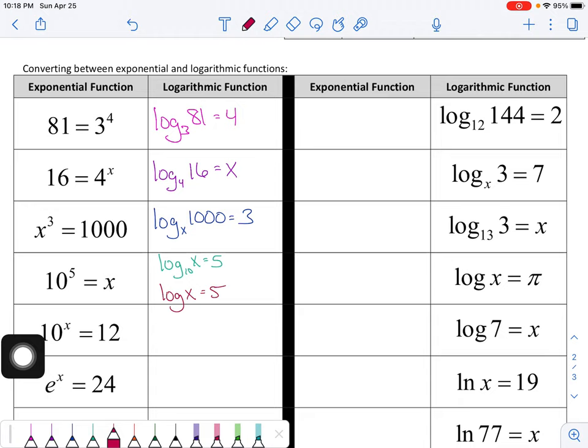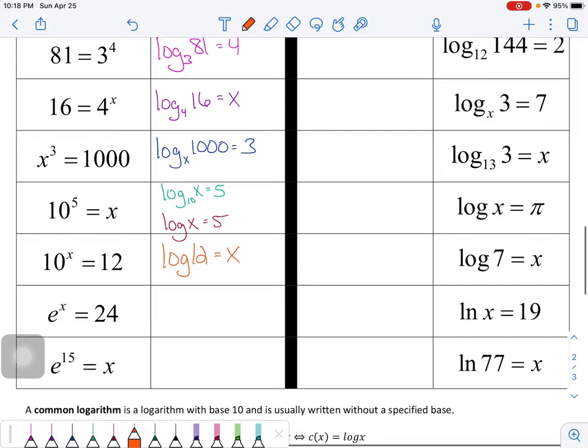So we can do the same thing here, right? 10 to the x equals 12. So I'm just going to write it a single way, assuming the base 10. So log base 10 of 12 is equal to x. I said a base 10, but I didn't actually write it. Now, if you write it, that's fine.